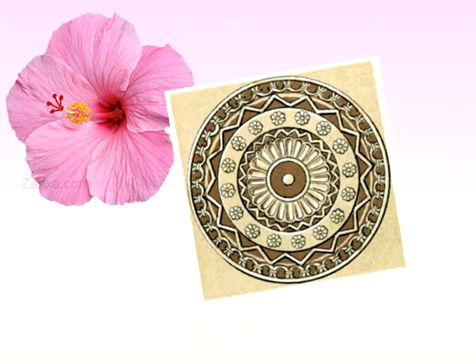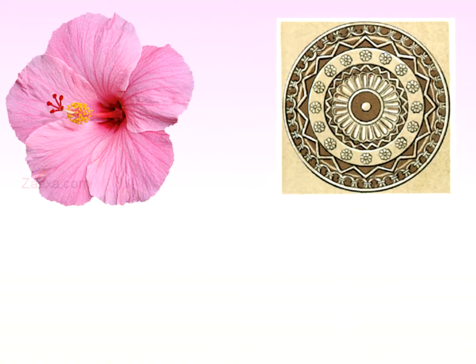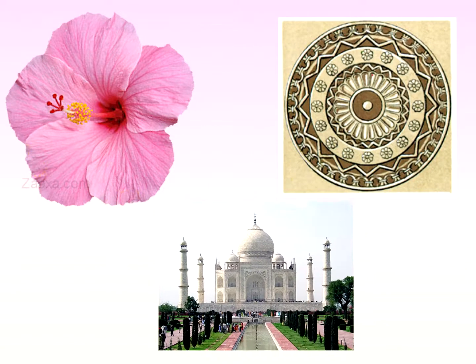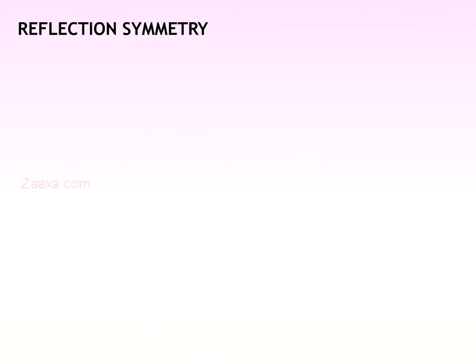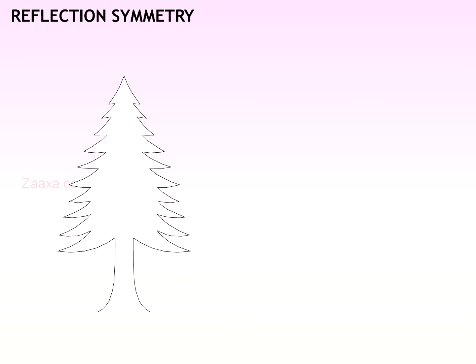Many things in the world around us have symmetry. Symmetry is found in nature, in art, and architecture. What is reflection symmetry? The simplest kind of symmetry is reflection symmetry. It is also called line symmetry or mirror symmetry.